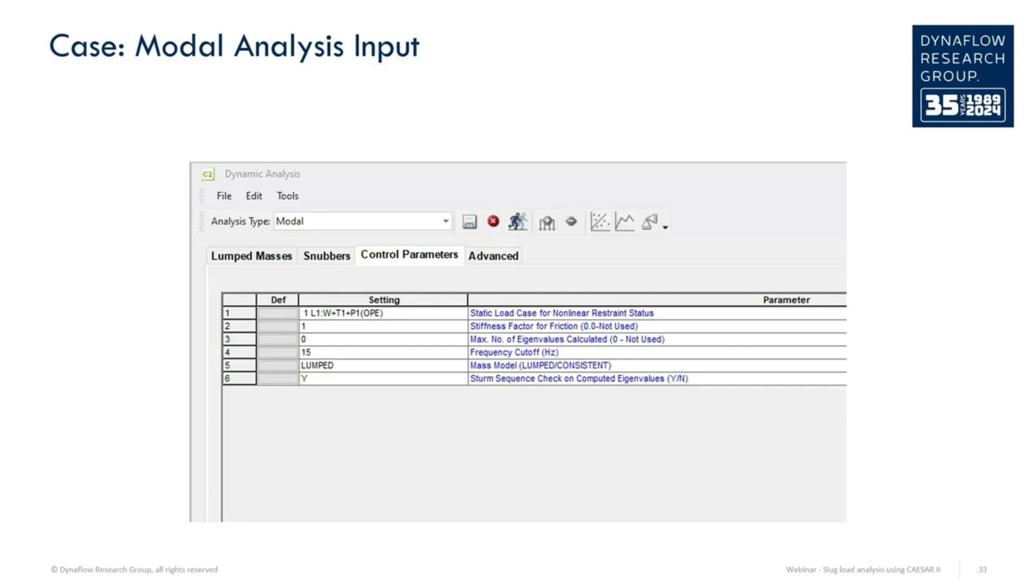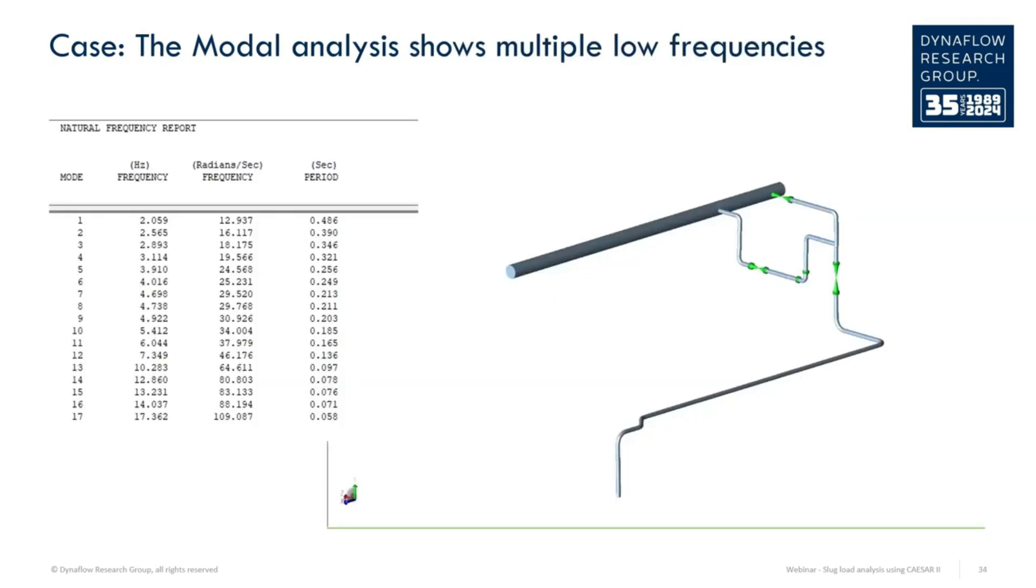As a maximum frequency, 15 Hz is chosen for now, so we are mainly interested in the lowest eigenfrequencies. There are many more options in the modal analysis for CSR2, but we will not discuss them today. We see that the first eigenfrequency is only about 2 Hz, which is very low.